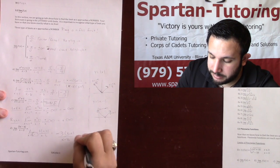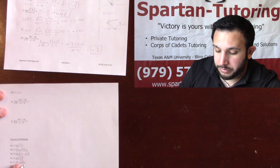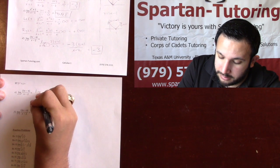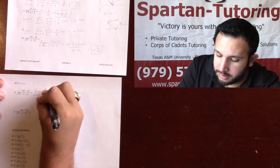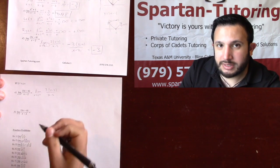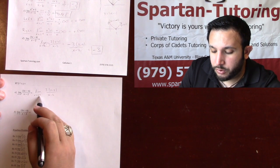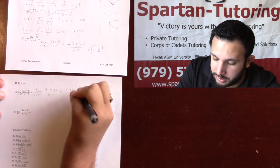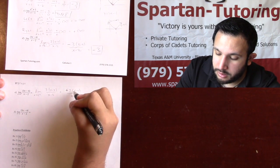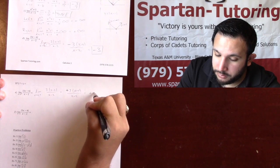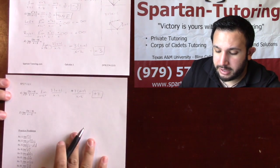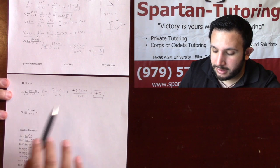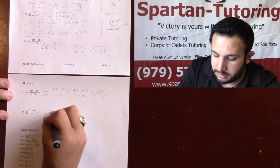The limit as x approaches 2 from the left is negative three. For the limit as x approaches 2 from the right, I factor out 3 again: 3·|x − 2|/(x − 2). Since I'm looking from the right side of the vertex, I drop the absolute value and make it positive: 3(x − 2)/(x − 2). Those cancel, giving positive three. Since the limit from the left is negative three and the limit from the right is positive three, this limit does not exist.